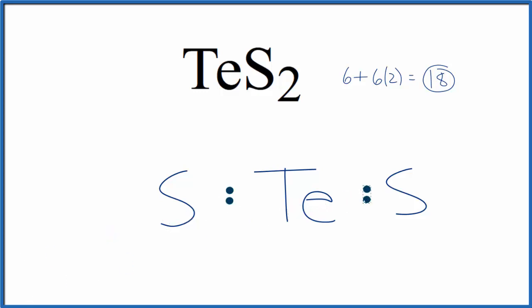So we have 18 total valence electrons, we put these two here, we have our chemical bond, and now we'll complete the octets on the outside atoms, on the sulfurs. We've used 16, we'll put two more here, now we've used 18.